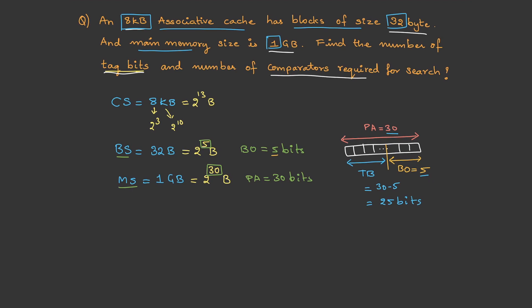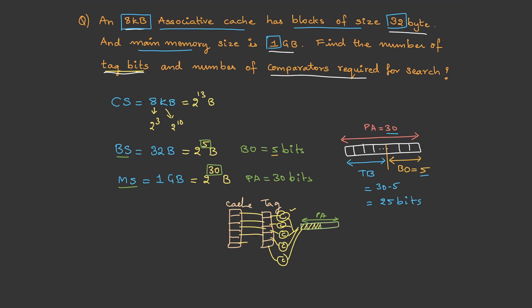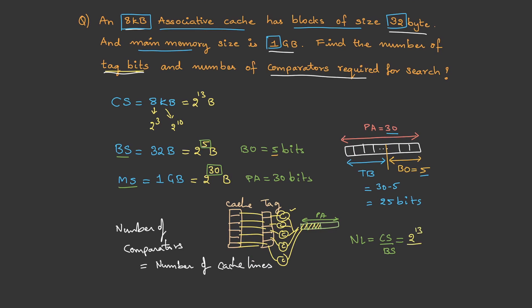Next, they ask for the number of comparators required. Since we need to compare the tag bits of the physical address with each and every cache line, we need as many comparators as there are cache lines. Number of comparators = number of cache lines = cache size / block size = 2¹³ / 2⁵ = 2⁸ = 256 lines. Therefore we need 256 comparators.